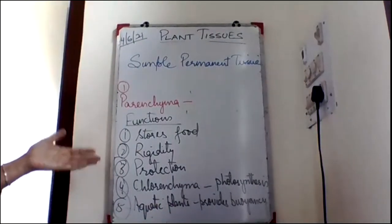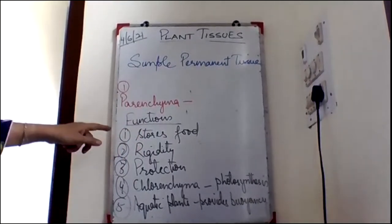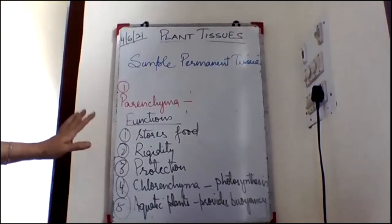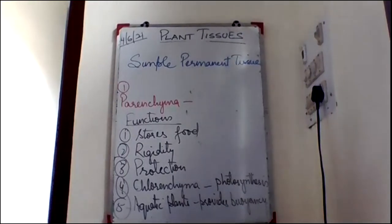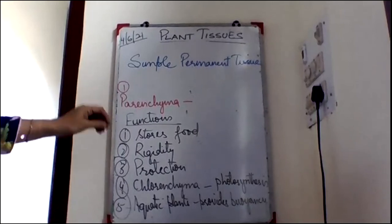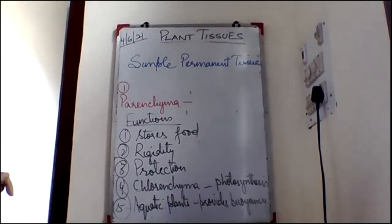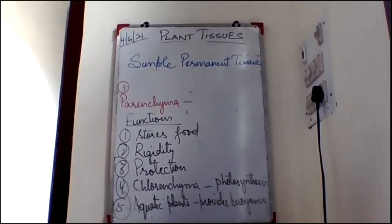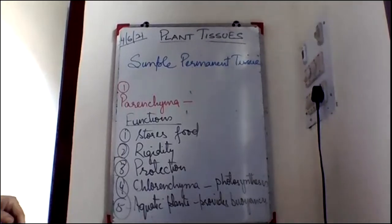Parenchyma also stores waste products such as tannins, gums, crystals, and resins. Parenchyma cells perform all vital metabolic activities of plants and also serve as a packing tissue between other tissues, providing mechanical strength. These are the functions of parenchyma. We will take up the second and third types of simple permanent tissue — collenchyma and sclerenchyma — in the next class.